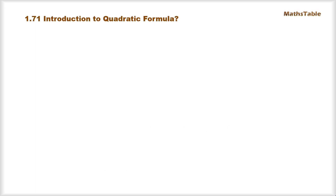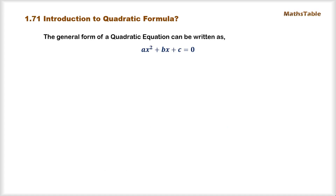First of all, let's discuss the general form of the quadratic equation, which can be written as ax² plus bx plus c equal to 0, in which the three constants a, b and c are unique for any particular quadratic equation.